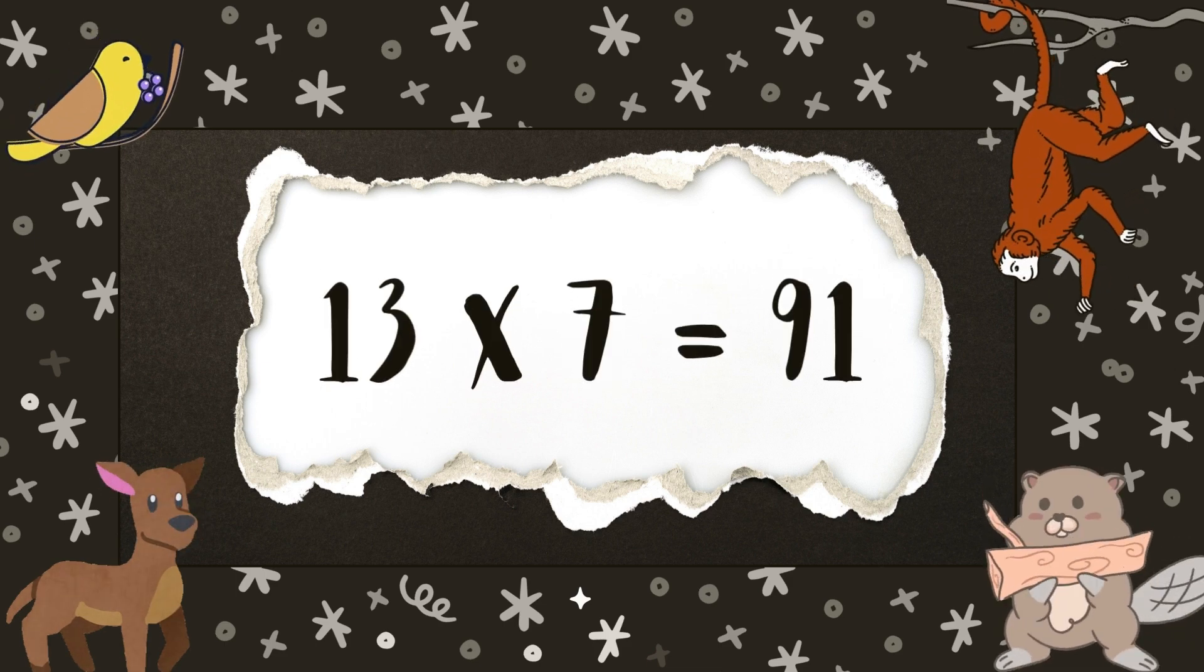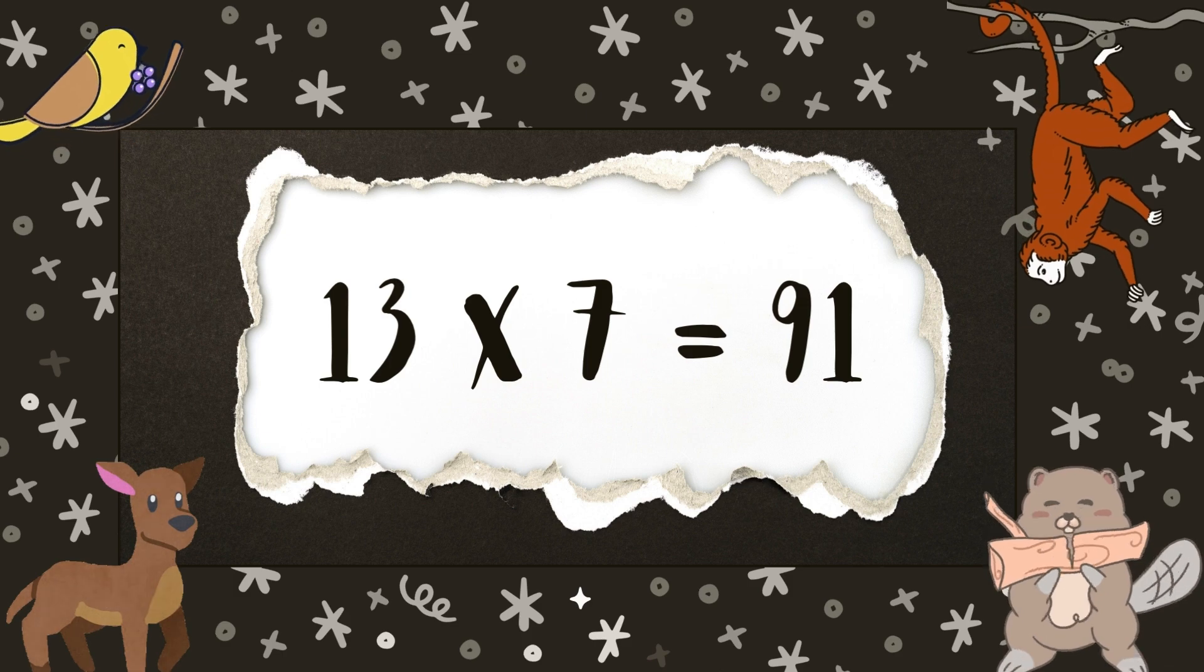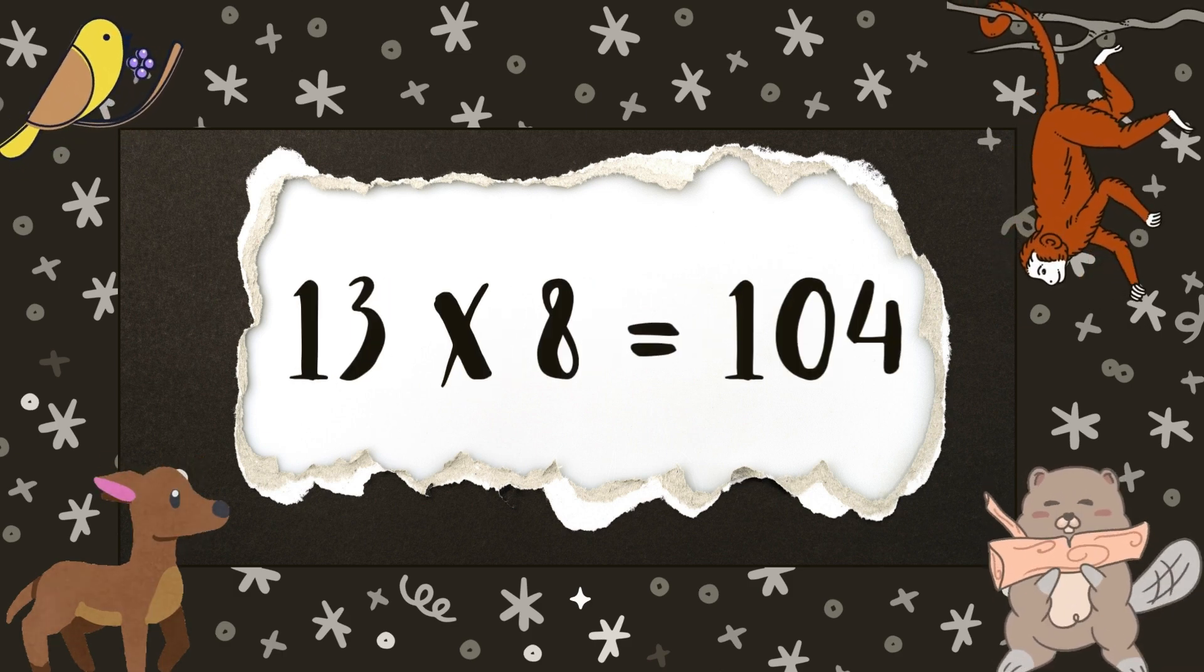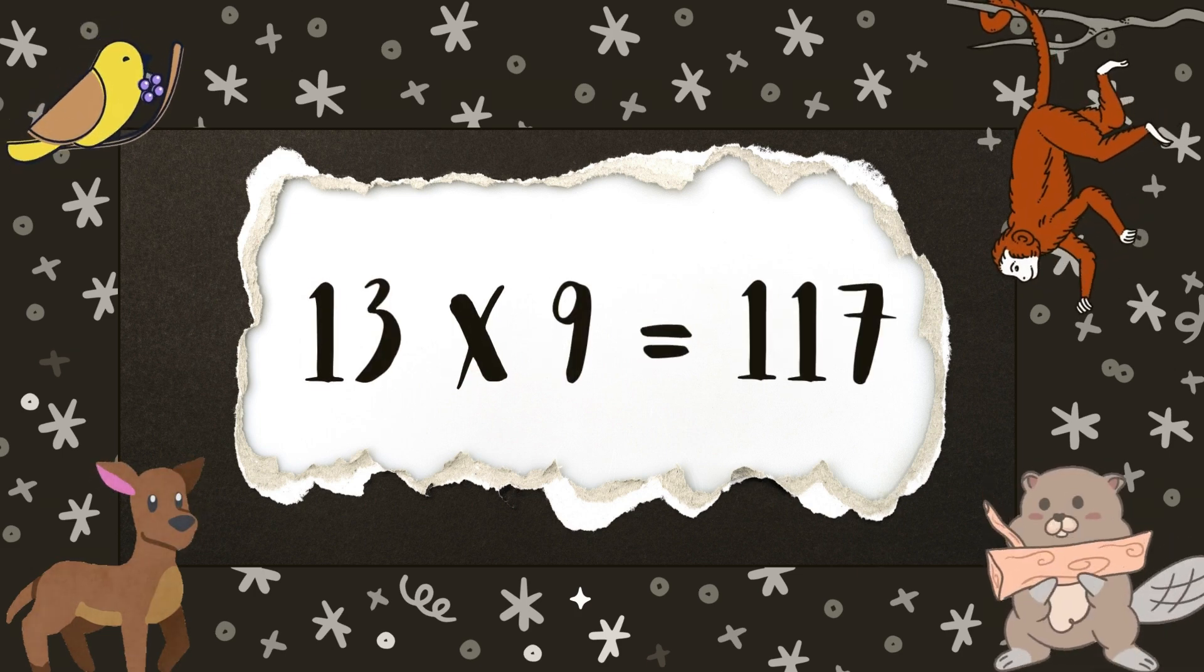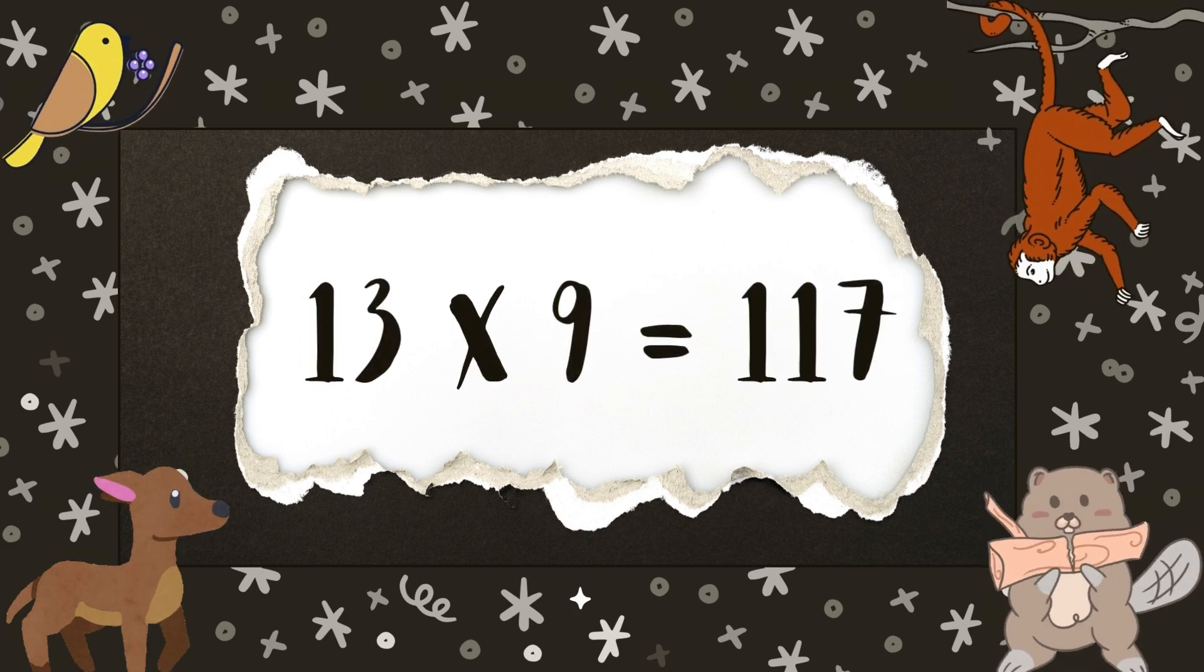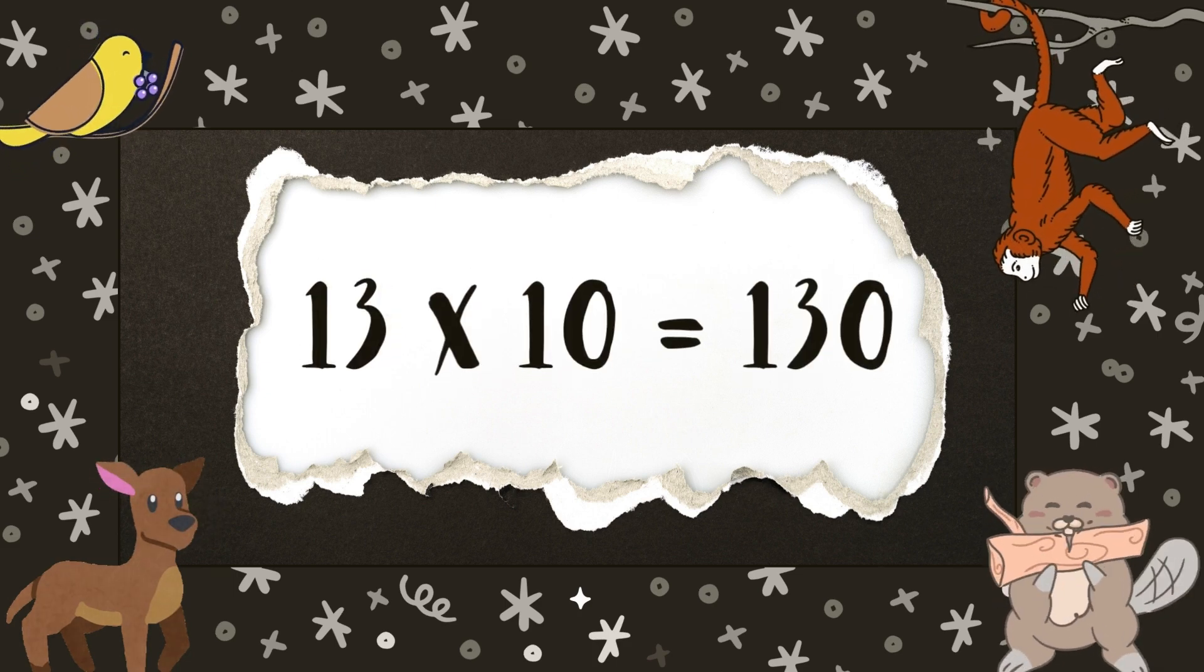13 7s are 91, 13 8s are 104, 13 9s are 117, 13 10s are 130.